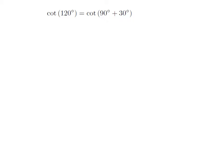As 120 degree is equal to 90 degree plus 30 degree, so cotangent of 120 degree is equal to cotangent of 90 degree plus 30 degree.